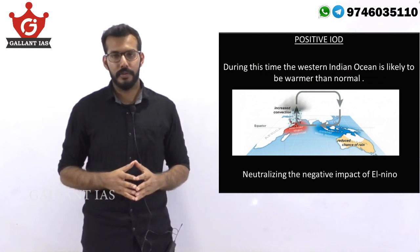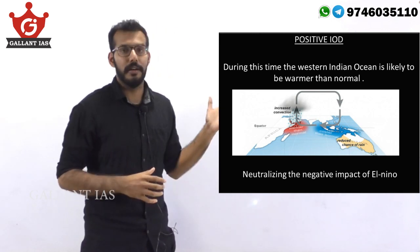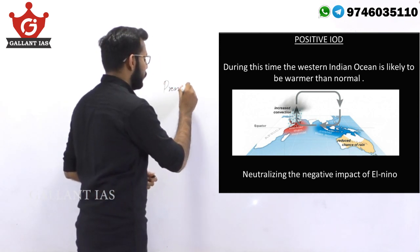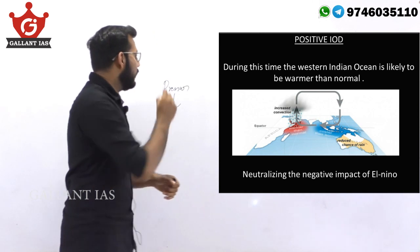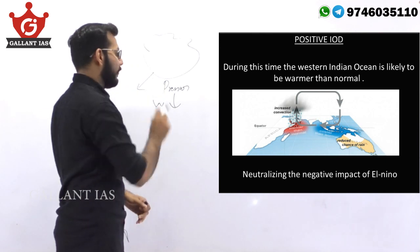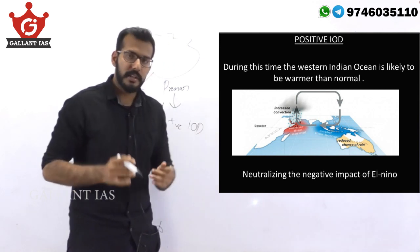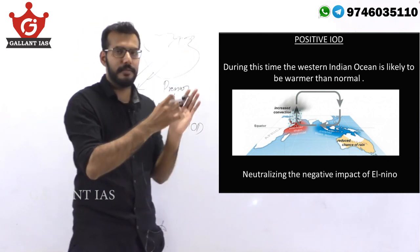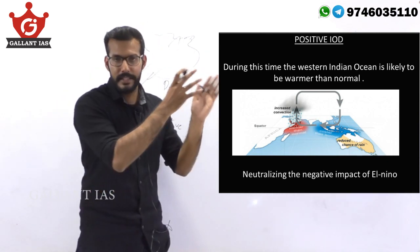During a positive IOD phase, the western Indian Ocean region is warmer than the eastern equatorial Indian Ocean region. This means that pressure is low, which draws in wind from all over the region, increasing the rate of evaporation and leading to cloud formation over the western equatorial Indian Ocean region. This brings rain in Africa and surrounding regions. If positive IOD correlates with the southwest monsoon season, the southwest monsoon winds carry these moisture-laden clouds towards the Indian subcontinent, leading to increased rain in our country.